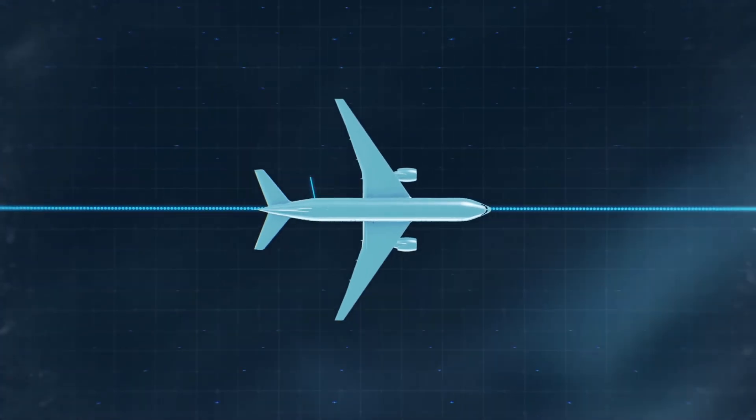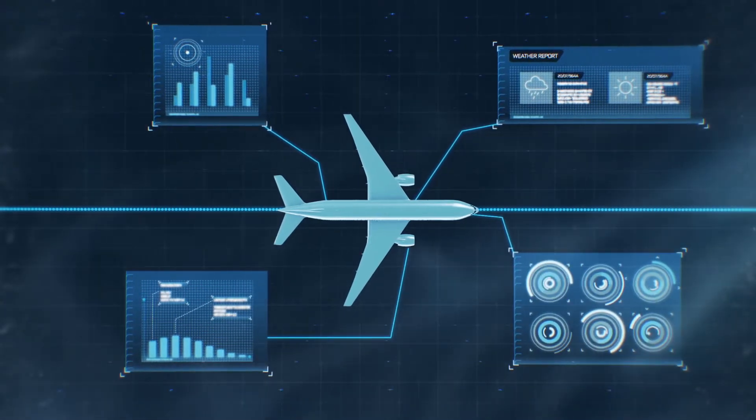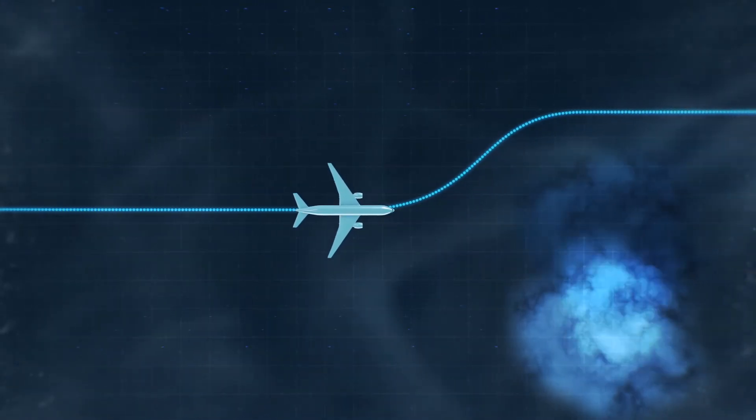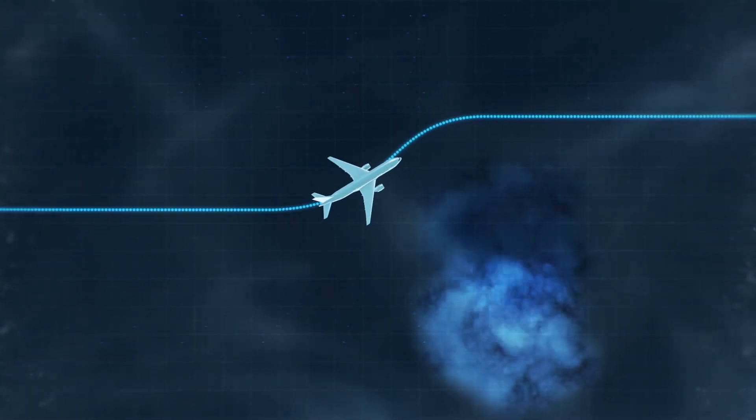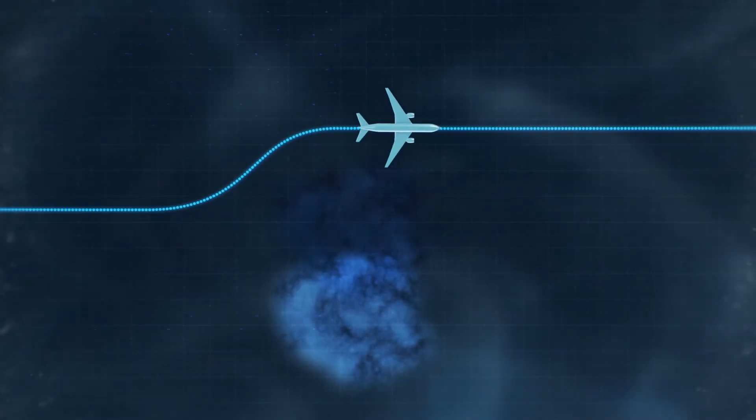Existing communication channels are also used to provide aircraft with specific operational information, such as thunderstorm alerts, turbulence warnings, optimum flight levels based on weather conditions, and key data to optimize climb-out and descent.